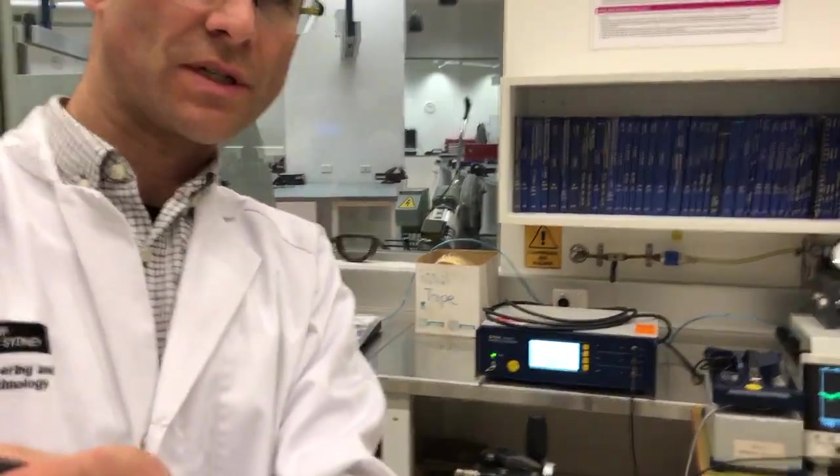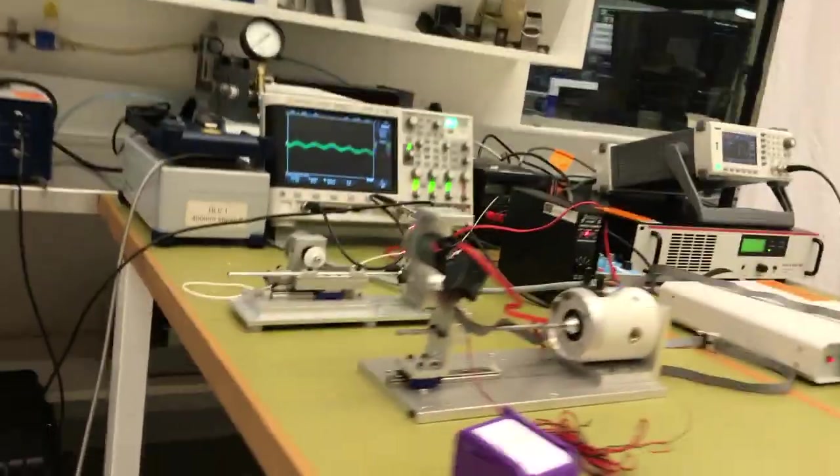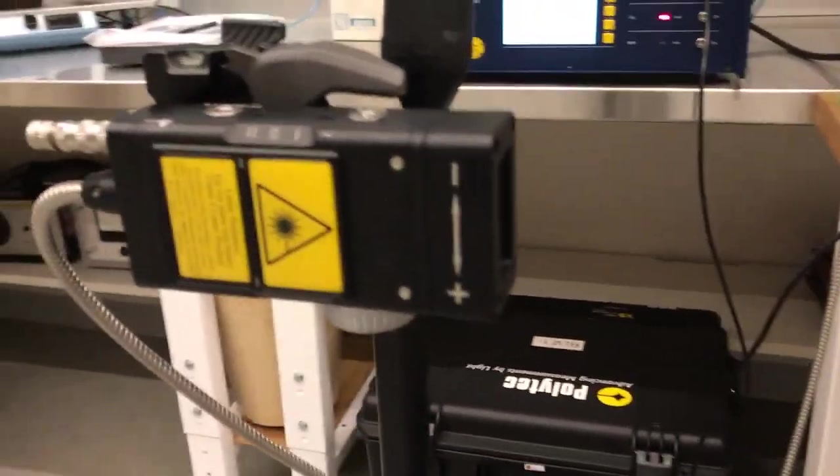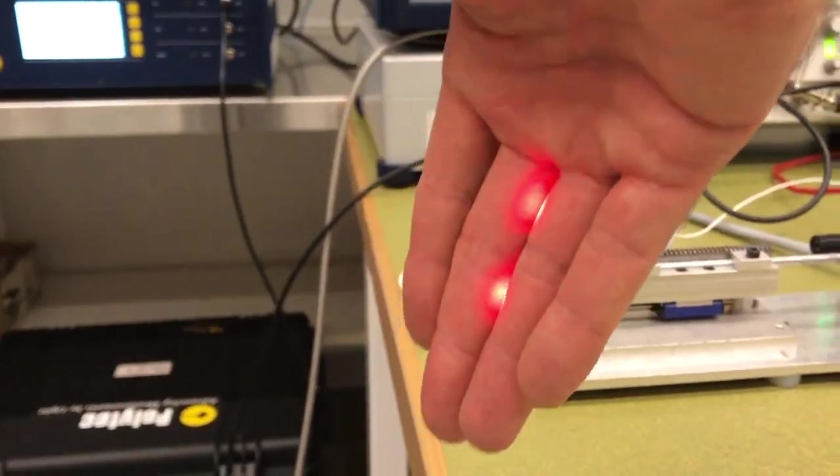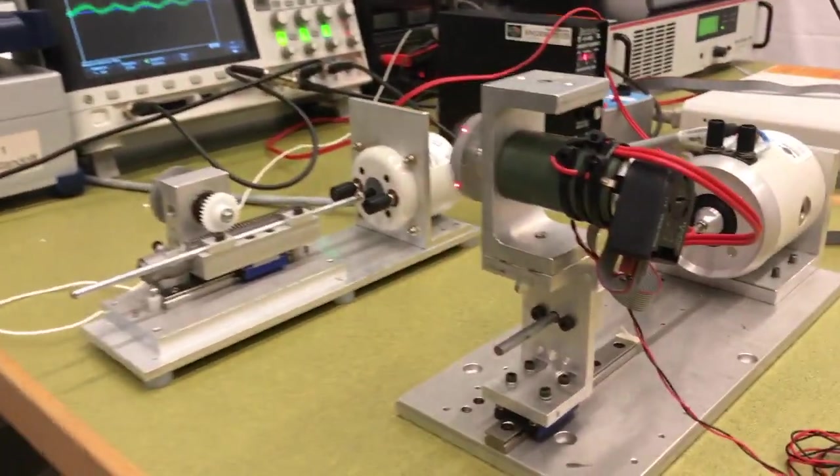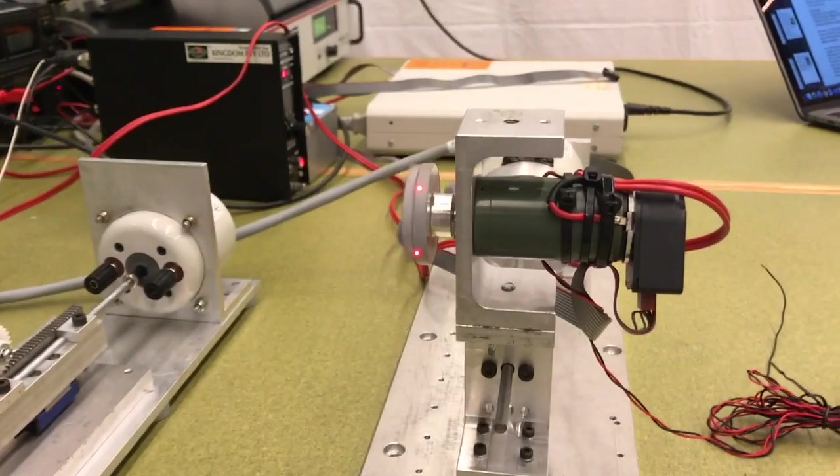I'm recording the third video of this series about laser torsional vibrometry. We will remember that we have a dual beam laser vibrometer here which measures angular vibration. One important type of angular vibration is torsional vibration.